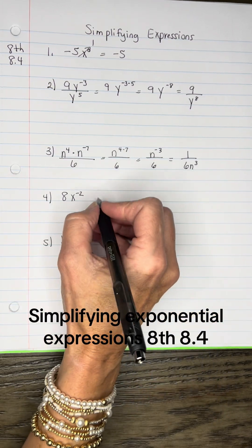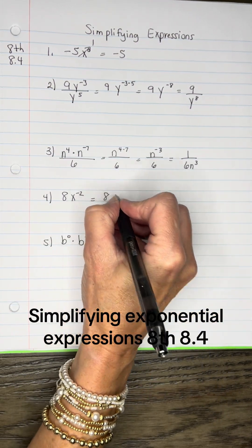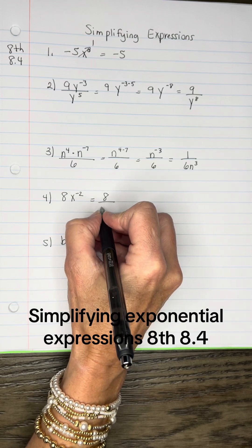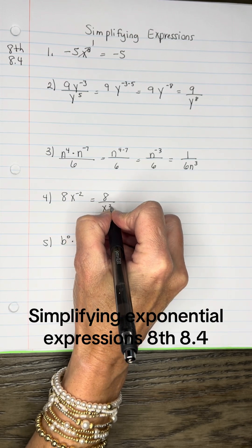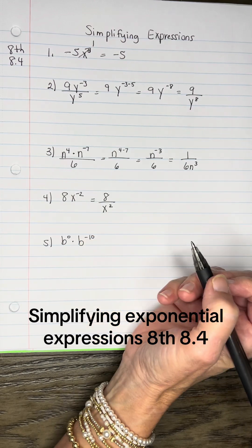Alright, and then here, the 8 will stay in the numerator's place, but the X will go to the denominator's place so that it can become a positive 2.